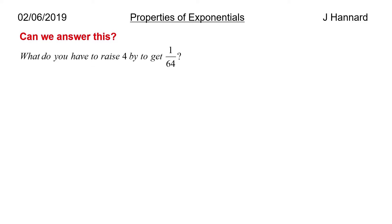What do you have to raise 4 by to get 1 over 64? Think about what we had to raise 7 by to get 1 over 49 — we raised it to the power of minus 2. So to raise 4 to the x to get 1 over 64: remember 64 is 4 cubed, so it must be 4 to the minus 3. That is, 4 to the minus 3 is 1 over 4 cubed, which is 1 over 64, so x is minus 3.